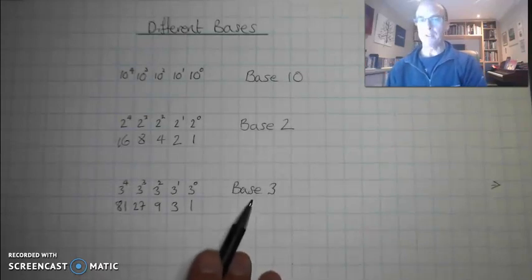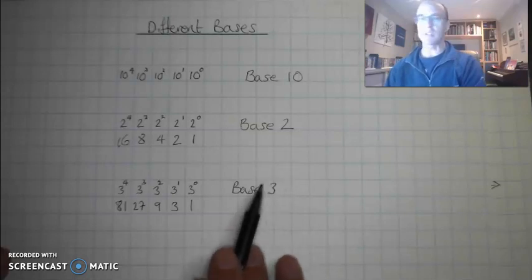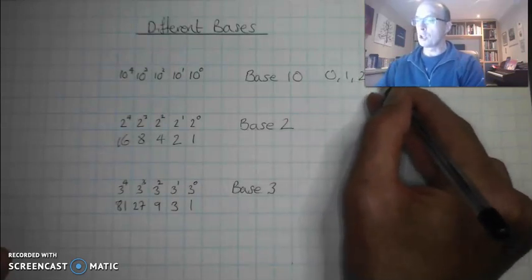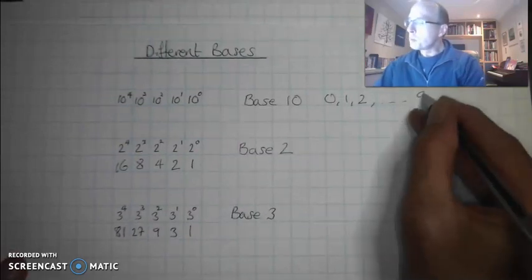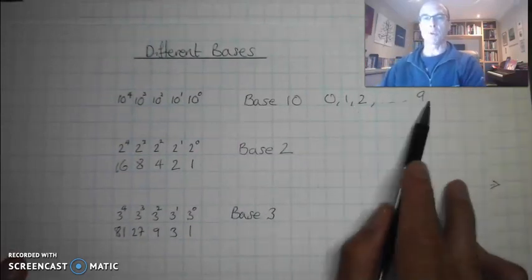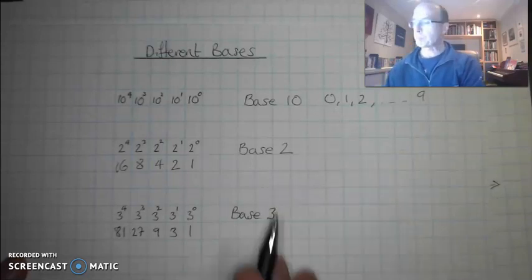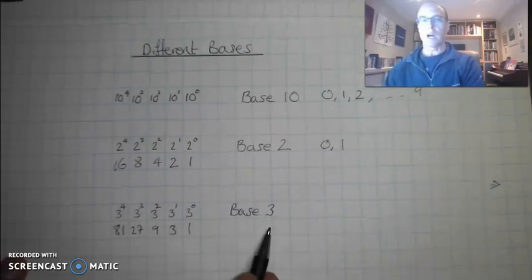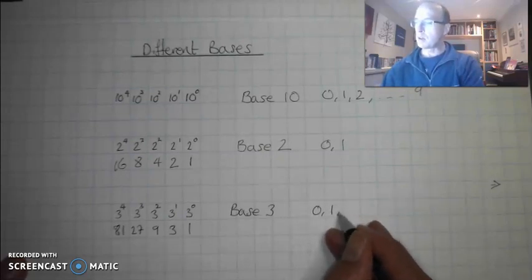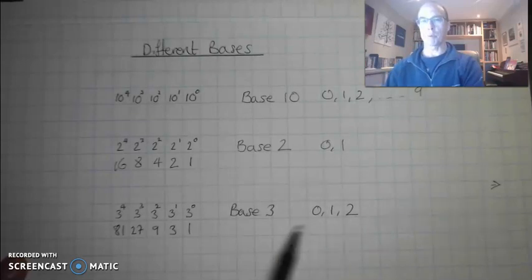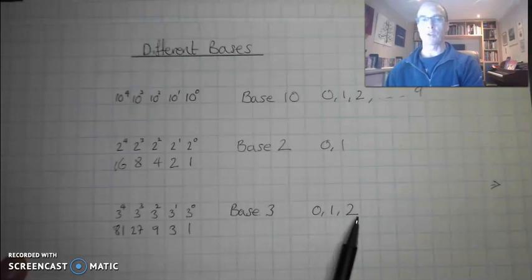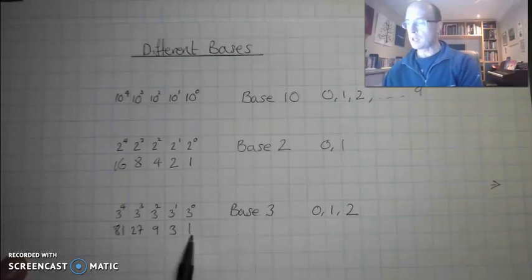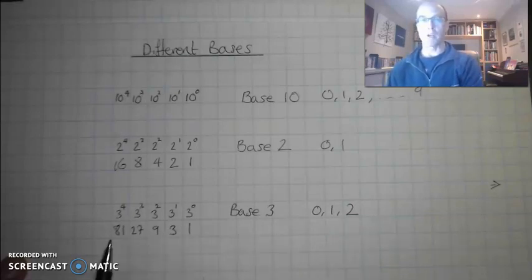The other thing I need to think about is the digits I'm allowed to use. For base 10 I can use 0 through 9 — that's 10 digits. With base 2 all I'm allowed is 0 and 1. With base 3 I'm going to be allowed 3 digits: 0, 1, and 2, and I stop at one lower than my base. So with base 3, the highest number I can use is a 2. That makes sense because as soon as I get to 3, that's going to be one column over in my positional table.